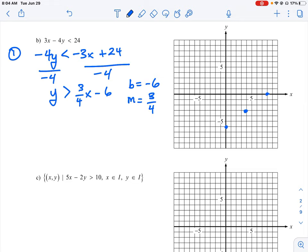And then we need to know: are we going to create a solid line or a dashed line? So this just is greater than—we don't have the equals to part—so this is going to be a dashed line going through your points. And then we need to determine how do we shade this.